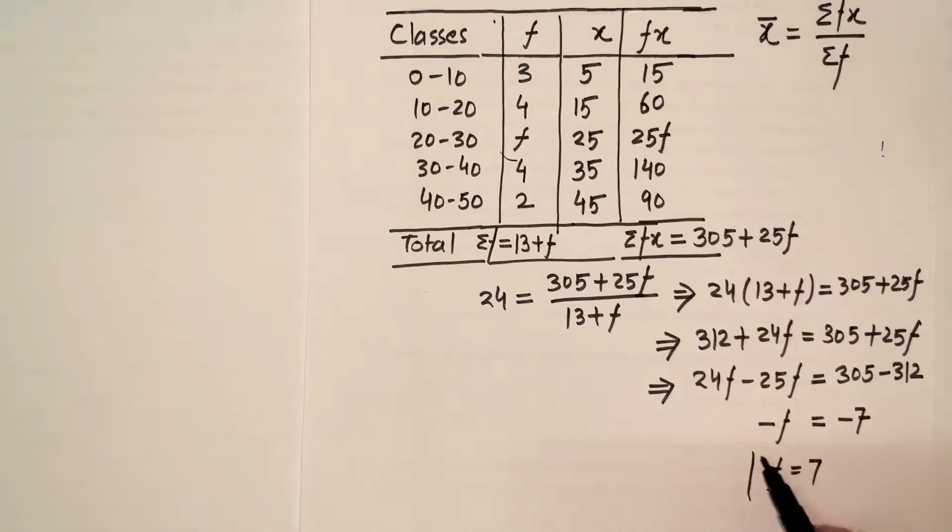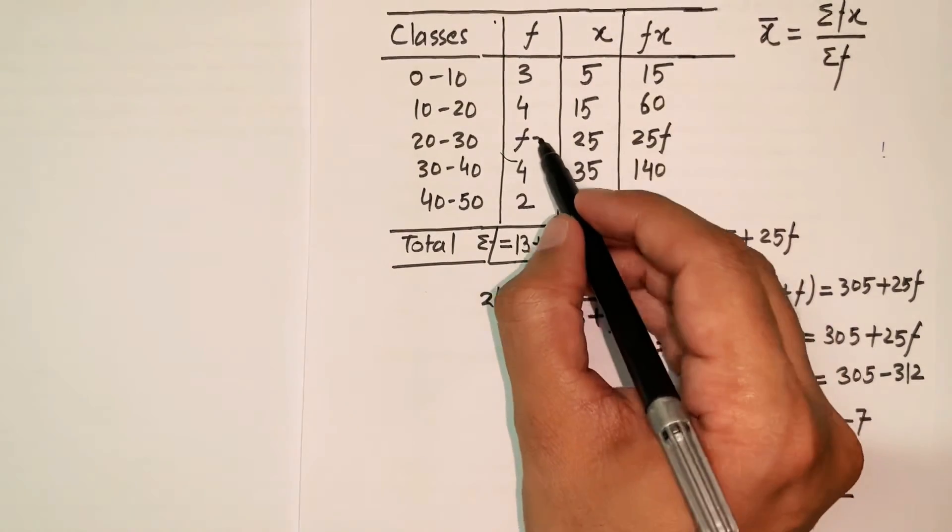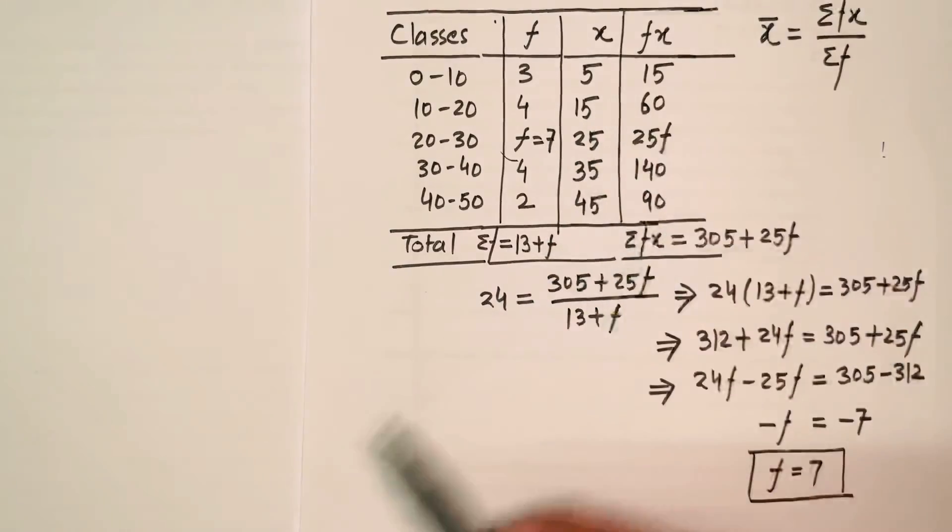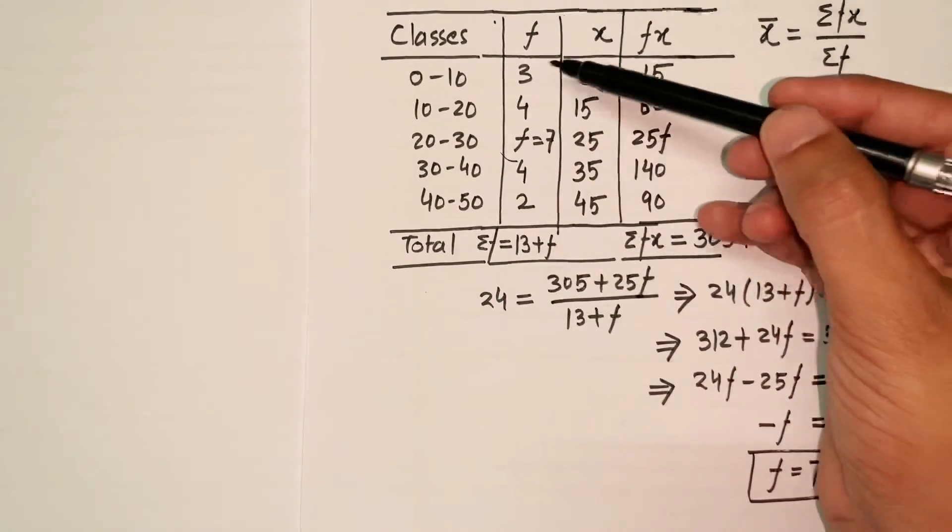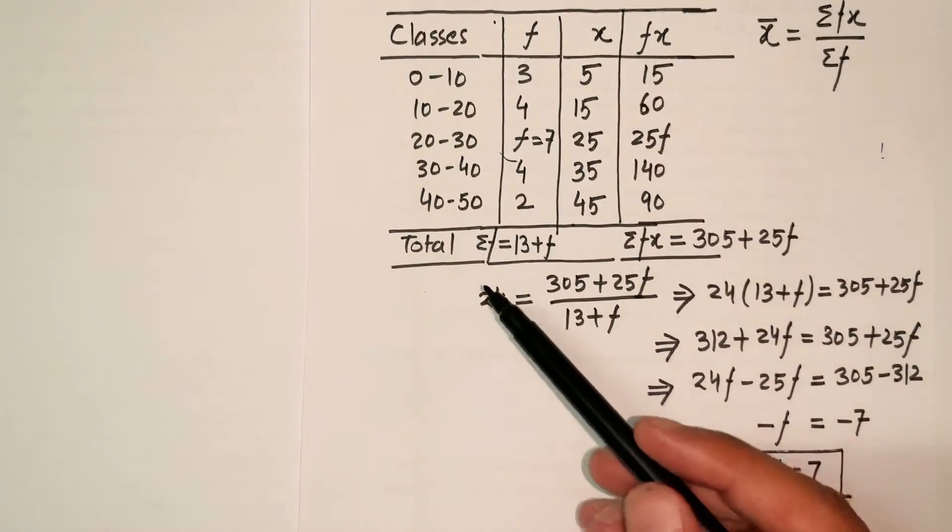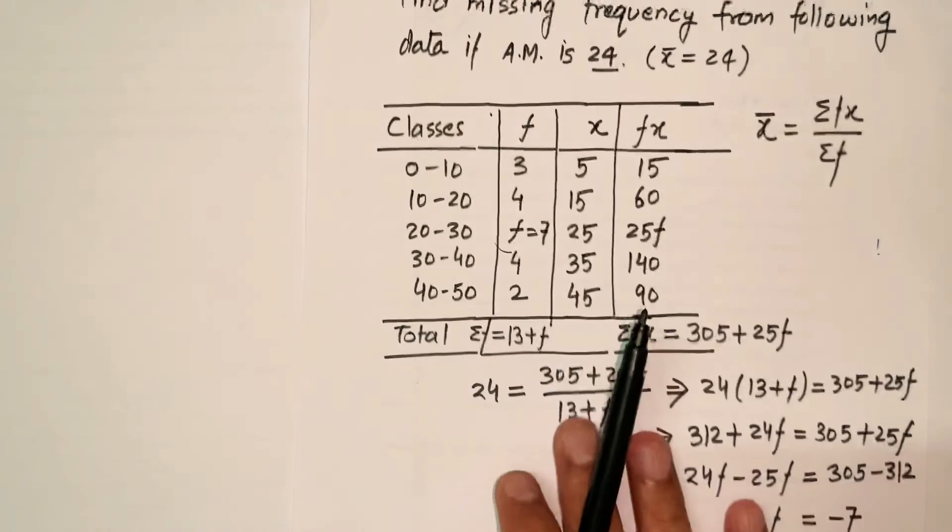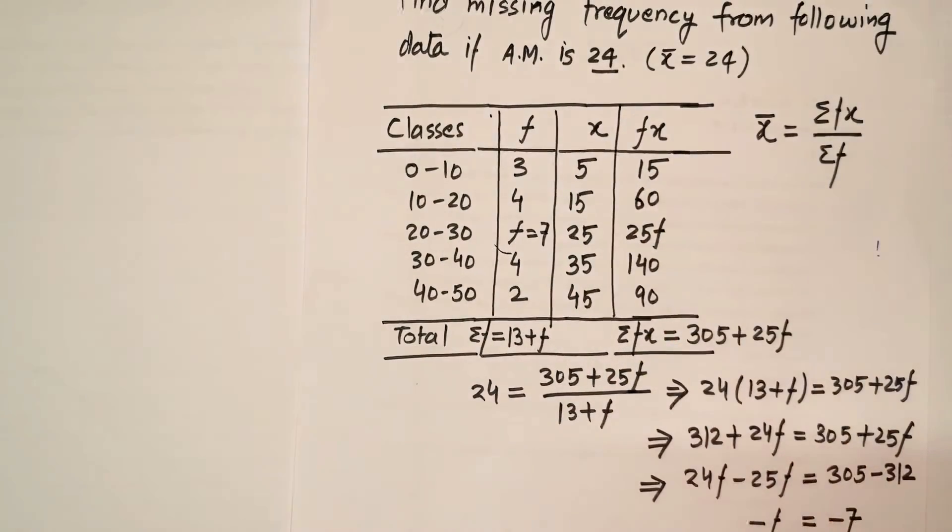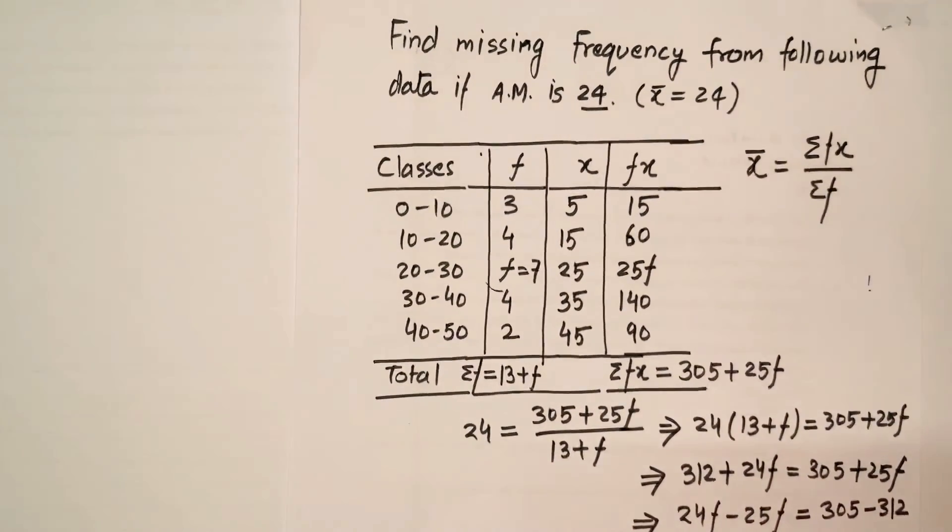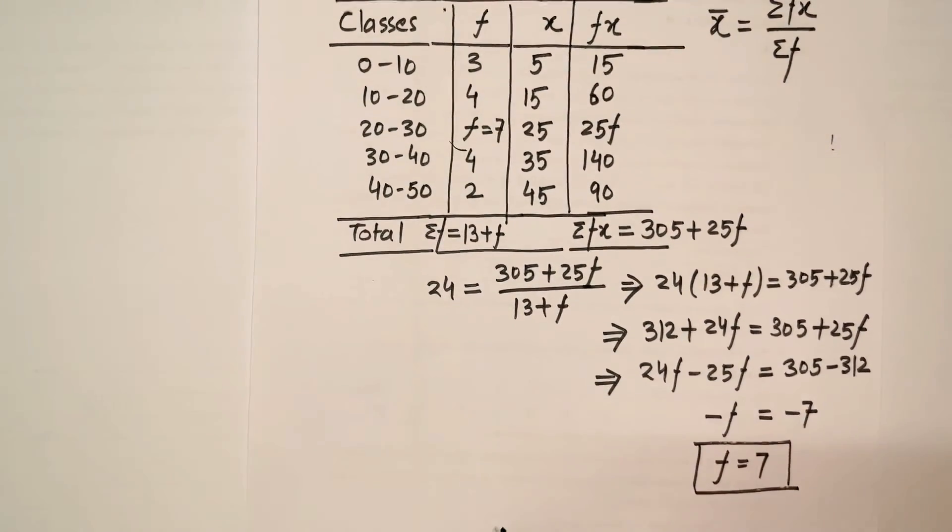So I have calculated my missing frequency, that is 7. This frequency right here is equal to 7. You can cross check it: you can sum the values 3 plus 4 plus 7 plus 4 plus 2, and after that you can calculate arithmetic mean by substituting the value, and the arithmetic mean should come out 24. That's a little cross verification that you can do. Thank you.